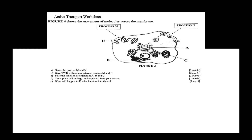Now, let's take a look at this question. This question is one that has been asked in examinations in the past. Figure 6 shows the movement of molecules across the membrane — we have process M and process N. Process M involves the take-up of solid material, meanwhile process N involves the take-up of dissolved solutes. So we can quickly answer that process M is phagocytosis and process N is pinocytosis.